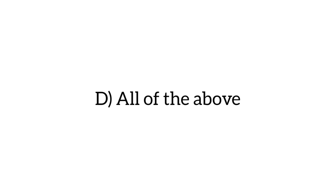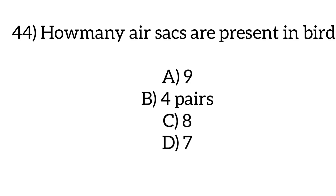How many air sacs are present in birds? Options: 9, 4 pairs, 8, or 7. Option A: 9.